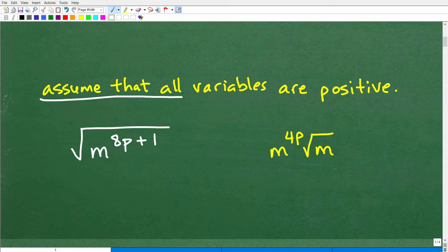is that we're going to assume that all variables are positive. So we have m to the 8p plus 1. So we're just going to assume that p here is going to be a positive value. But with that assumption made, here is the answer. m to the 4p times the square root of m, this is the answer.